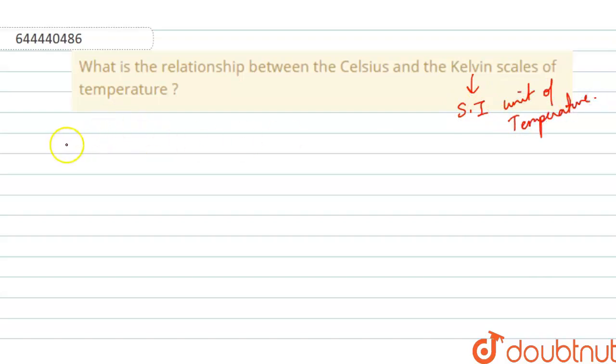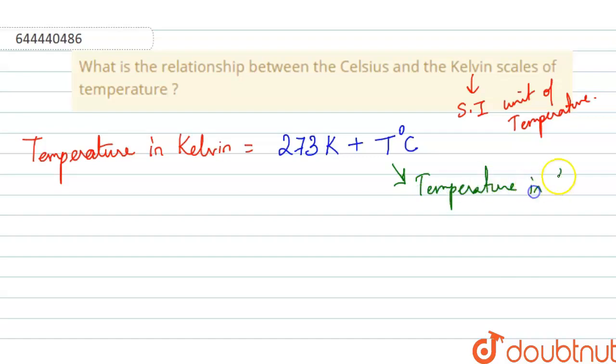Now, any temperature in Kelvin is equal to 273 Kelvin plus the temperature in Celsius. T is the temperature in Celsius.